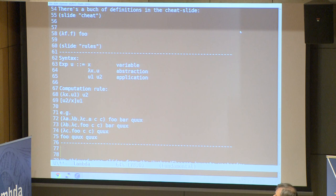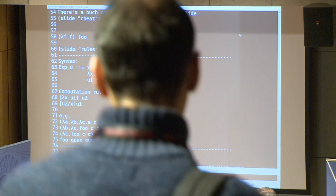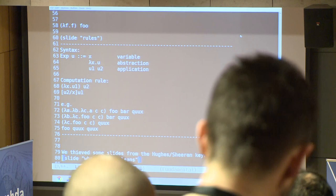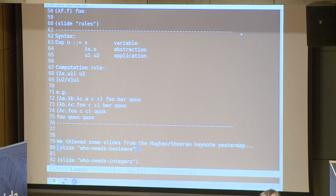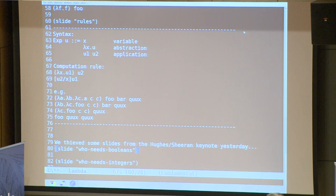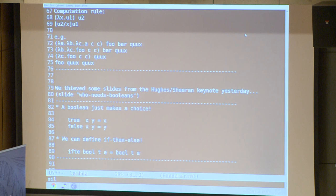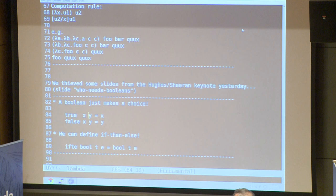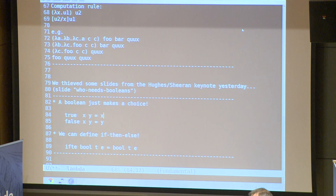In most programming languages you have a concept of data — numbers, strings, booleans — which seems to be missing from lambda calculus. As in the first keynote yesterday, those slides asked 'who needs booleans, who needs integers?' — most programmers do, but we stole those slides. A boolean just makes a choice: if you have a true function that takes two arguments, true returns the first one and false returns the second one. This is similar to if-then-else.